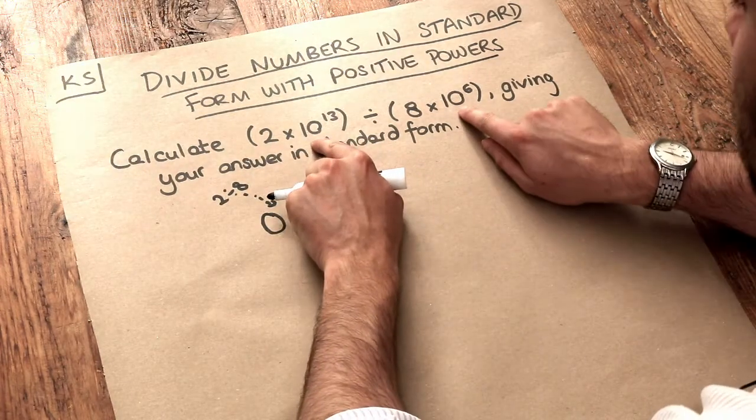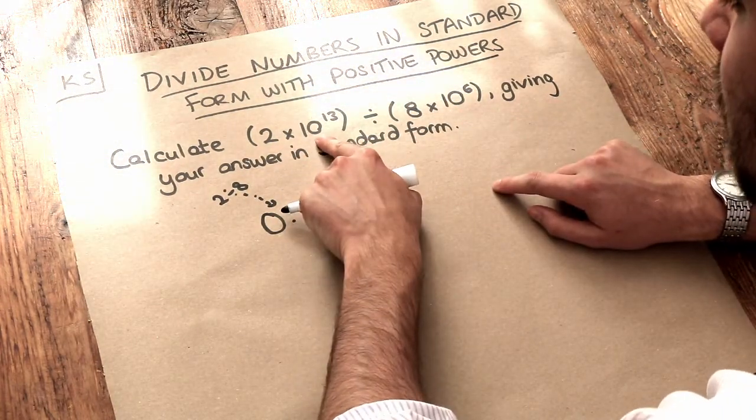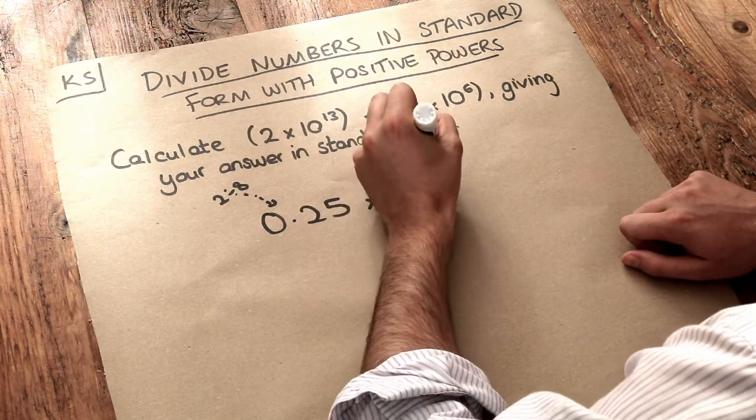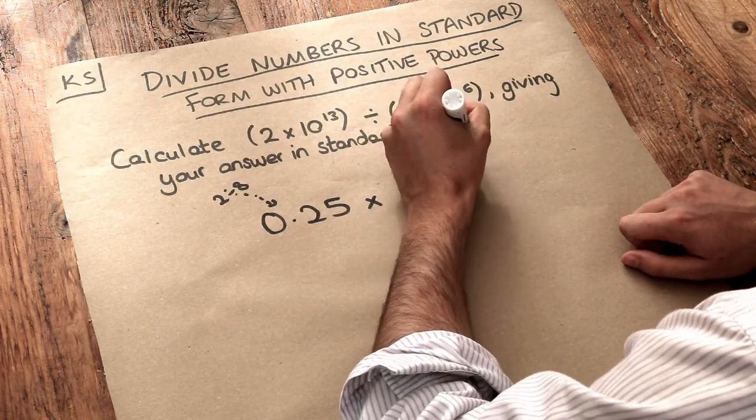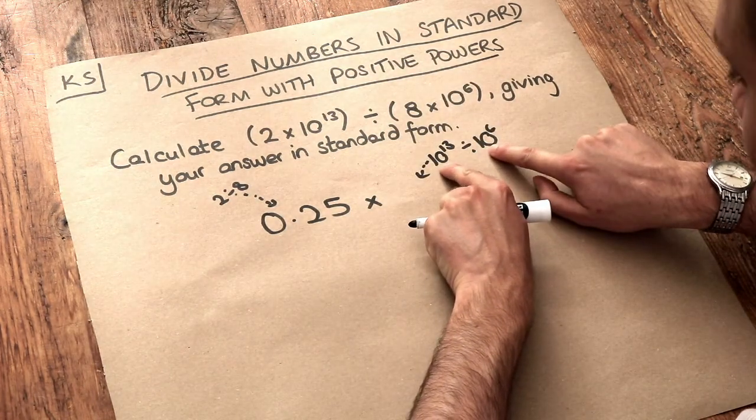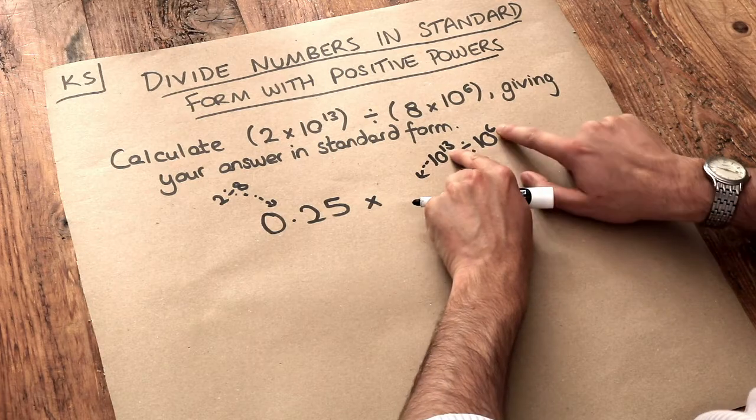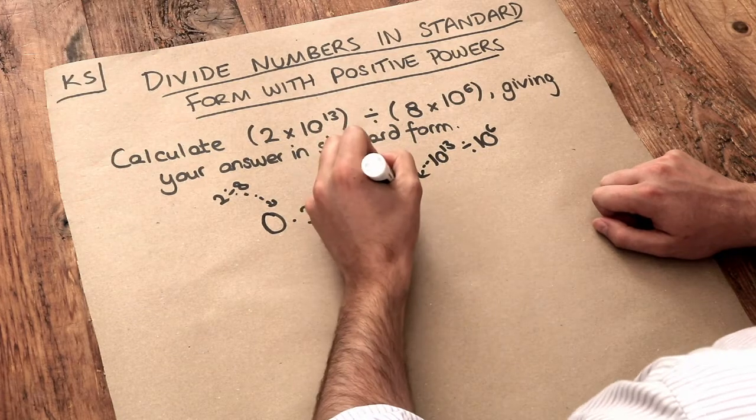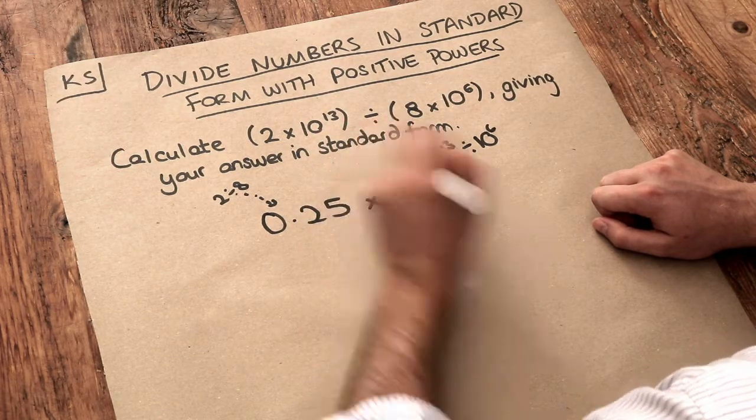And then we do the powers of 10 divided by each other. So we do the 10 to the power of 13 divided by the 10 to the power of 6. Now do you remember when you divide two powers with the same base, the same base of 10, you subtract the indices. So we're going to do 13 minus 6 which is 7, so it's 10 to the power of 7.